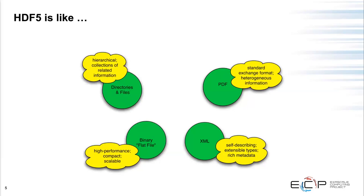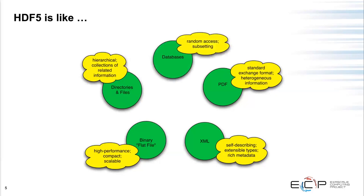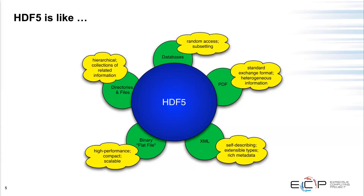The group hierarchy in HDF5 is very similar to a directory and file system structure — hierarchical, allowing you to group things in logical ways for your applications and science domains. It's also similar to a database, allowing random access and subsetting of data so you can extract just the pieces you need without parsing the entire file. HDF5 encompasses aspects of all these without being exactly equal to any of them.